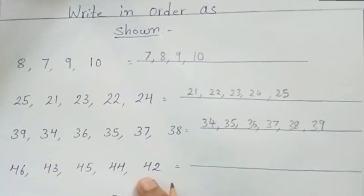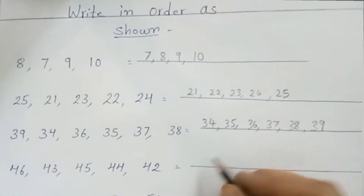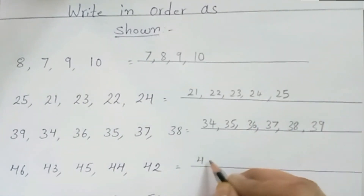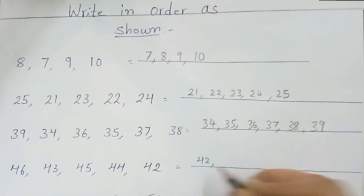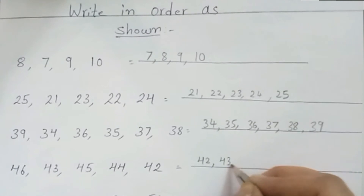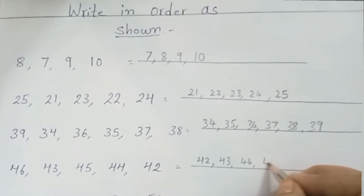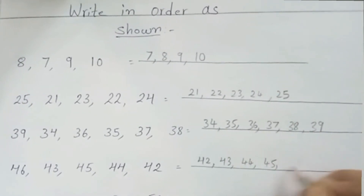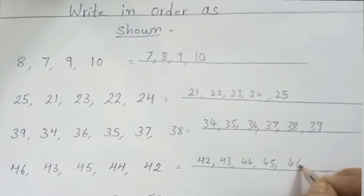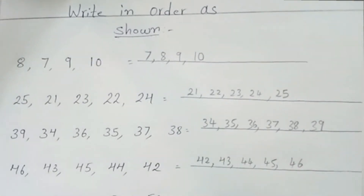Fourth line. Which is the smallest number children? 42. So you have to write here 42, then 43, 44, 45, and 46. So you have to write small to big.